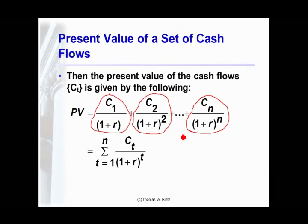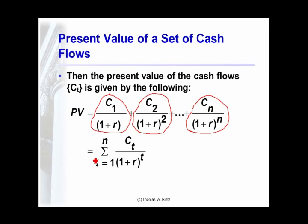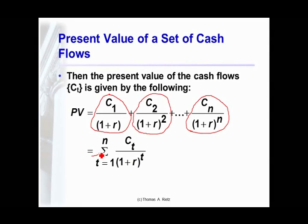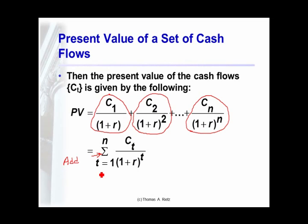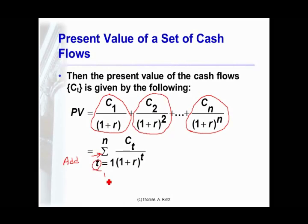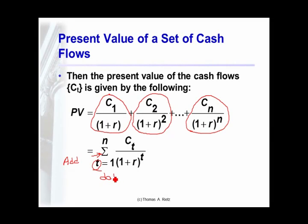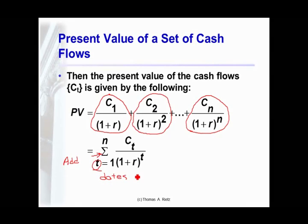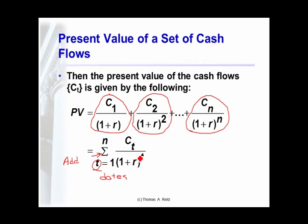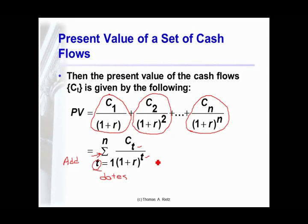Now the shorthand notation we have for doing this includes this summation sign. That just means add across the periods or dates the discounted value of the cash flow at that date divided by 1 plus interest, number of periods between now and that cash flow.